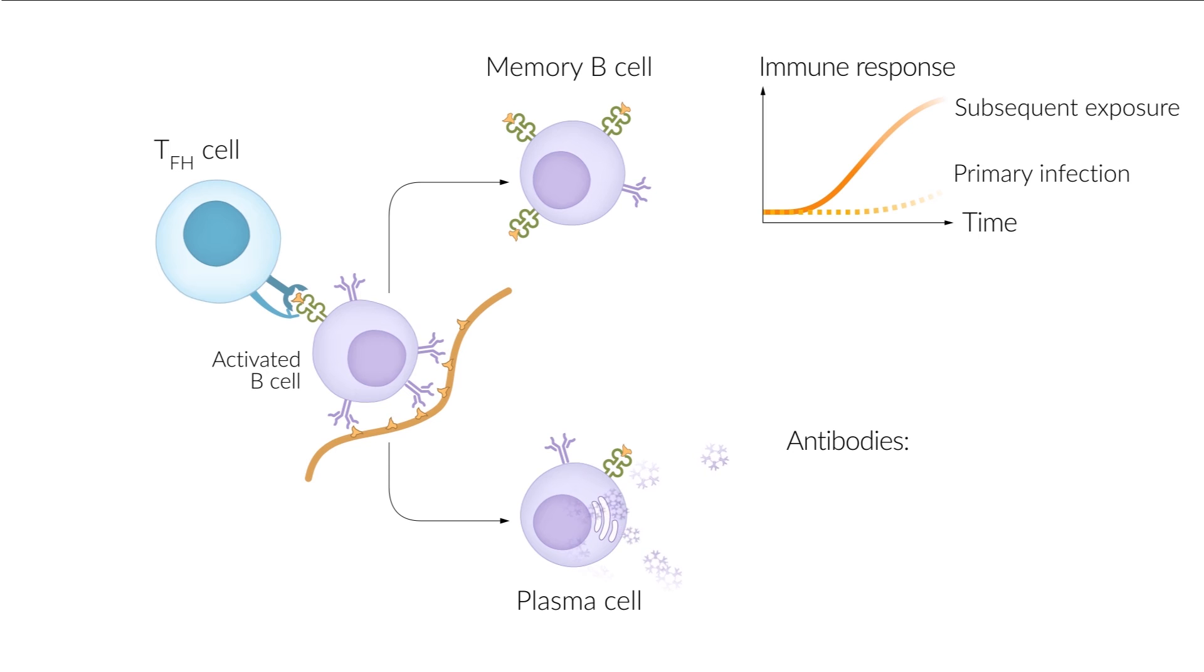The plasma cell produces antibodies that match the antigen on the pathogen. Initially, IgM antibodies are formed. After interaction of the plasma cell with the T helper cell, high-affinity IgG antibodies and other antibodies that are adapted to specific needs are generated.